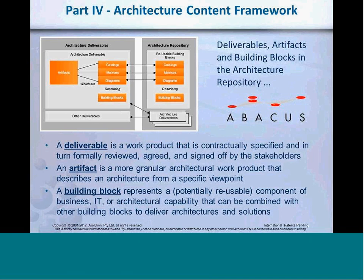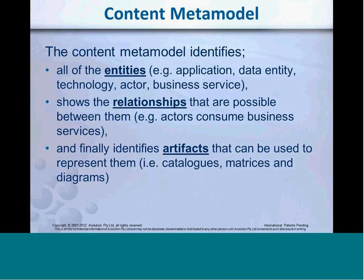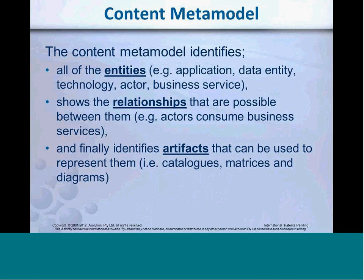If we drill into what TOGAF refers to as an artefact: artefacts are made from content metamodel parts. It talks about entities — objects or boxes, things like applications and data entities — and relationships between them, which are your connections or lines between the boxes. For example: an actor consumes a business service. These artefacts are embodied in three types: catalogues, which are tables; matrices, which are grids with Xs in them; and diagrams, which are pictures — what people often call models.